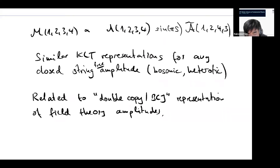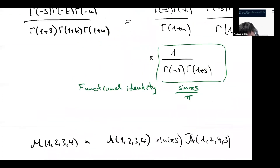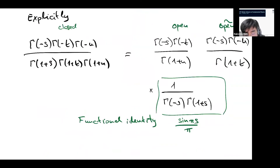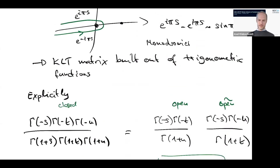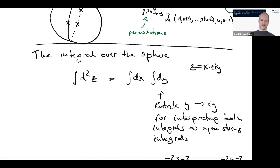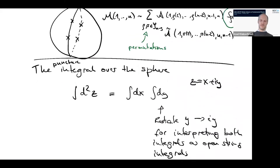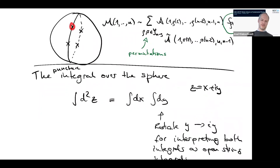Question from audience: Is the sine(πS) coming from the integration over the location of the puncture? Yes, exactly. The variable being integrated is the integral over the unfixed punctures. In the picture, there are integrals over z for all the punctures, but you can fix three. For the four-point case, you're left with one integral, and you have to disentangle it into two parts. The real part immediately becomes an open string integral, and for the imaginary part you have to do this analytic continuation — it comes from the punctures.